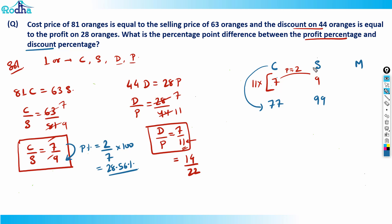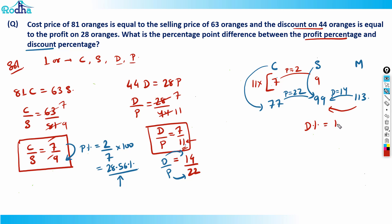So cost price is 77, selling price is 99, and profit is now 22. Since d/p = 7/11, when profit is 22, discount is 14. The shopkeeper sold at 99 with a discount of 14, so the marked price must be 99 + 14 = 113. Now the ratio is 77 : 99 : 113 (cost : selling : marked price). Discount percentage = 14/113 × 100.